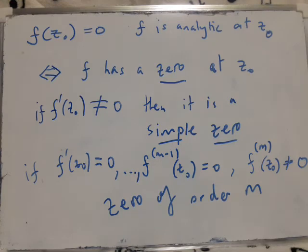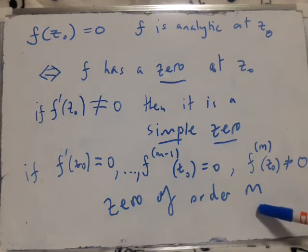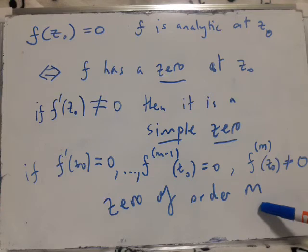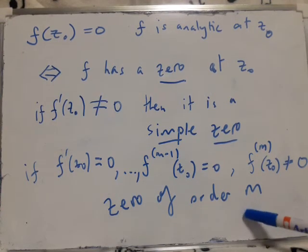So actually this still works for m equals 1. So a simple zero is basically a zero of order 1.